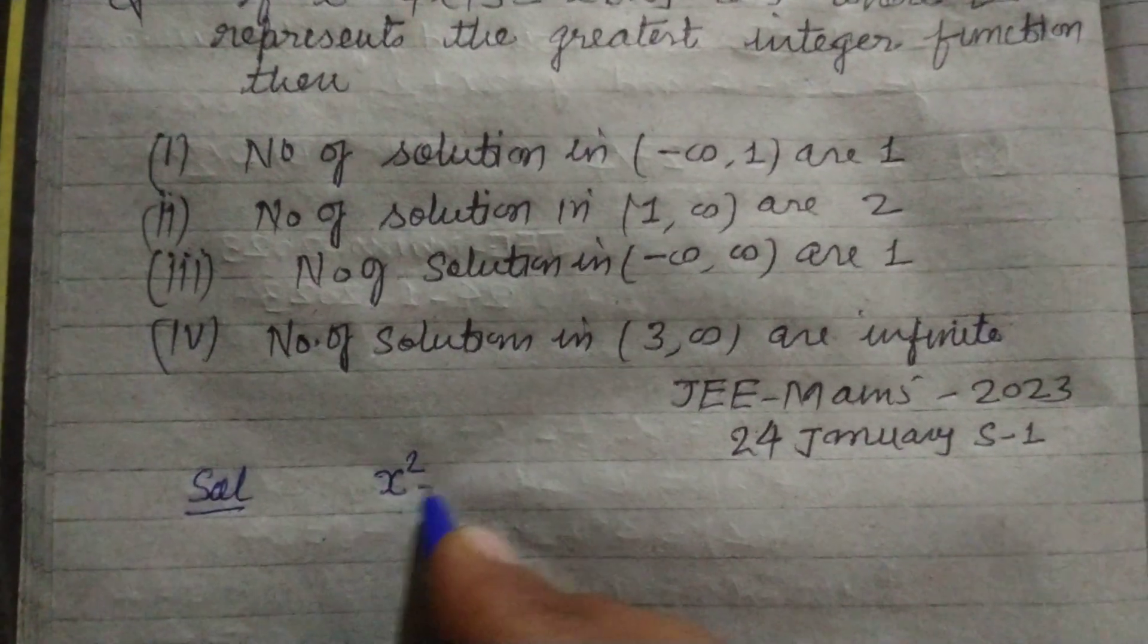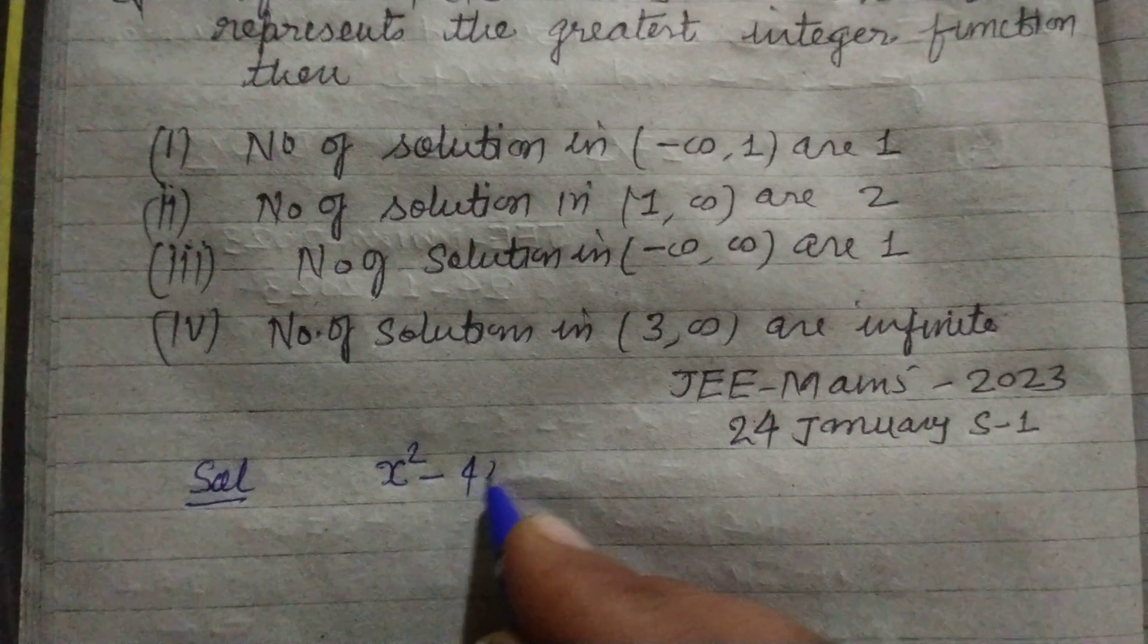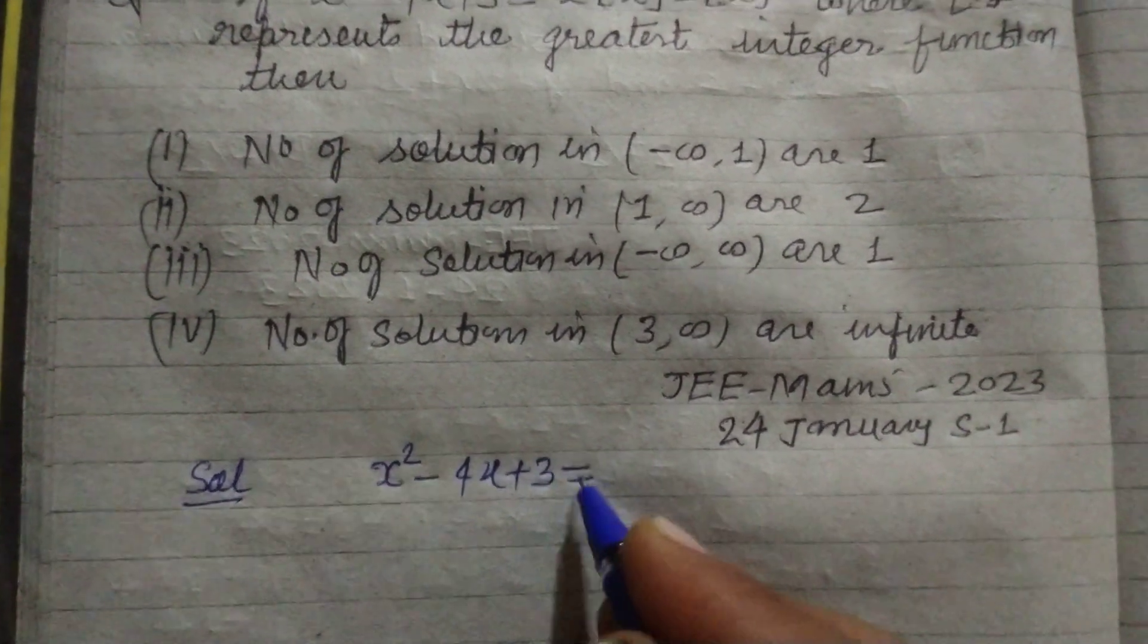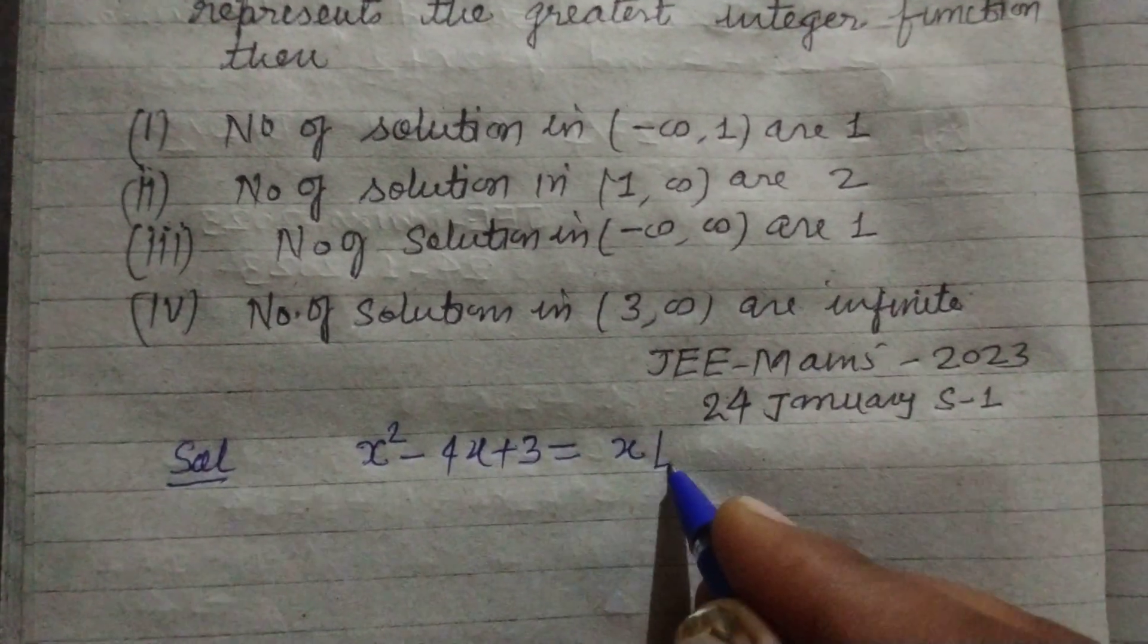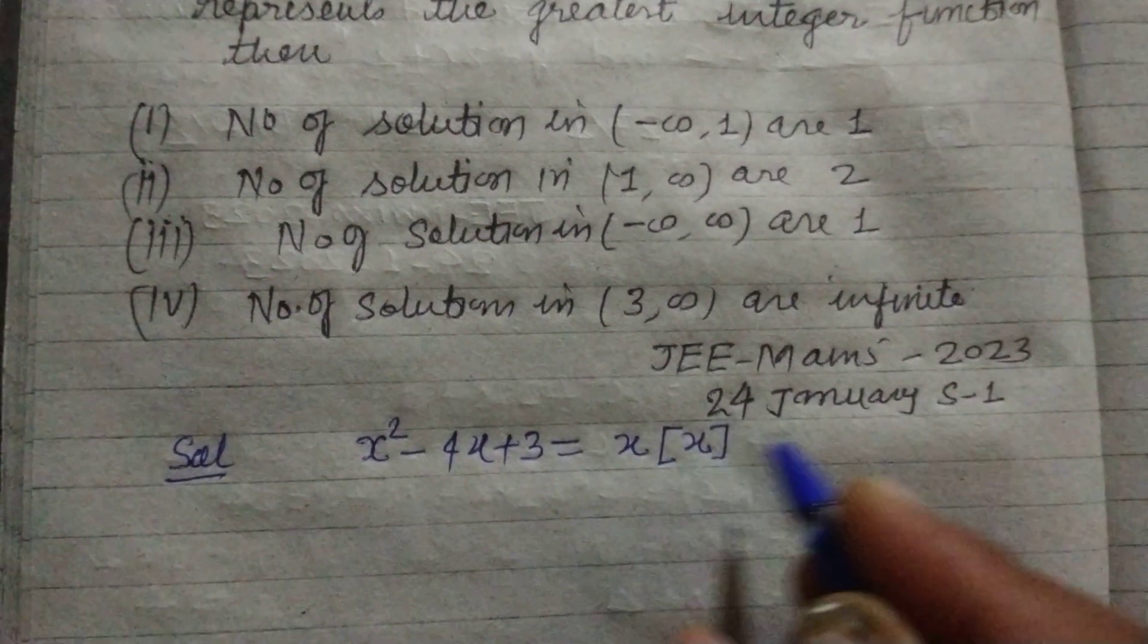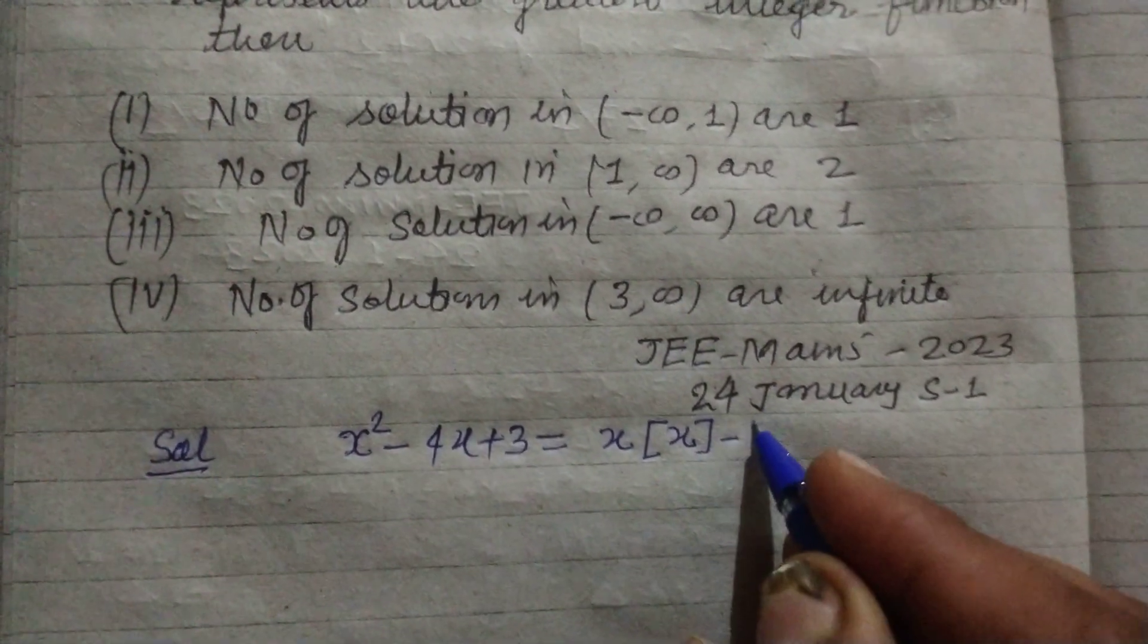given equation: x² - 4x + 3 = x[x] - [x], where [x] is the greatest integer function.